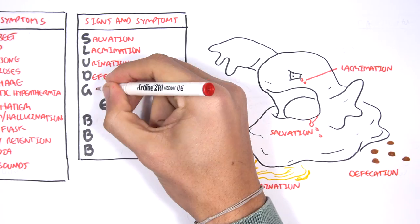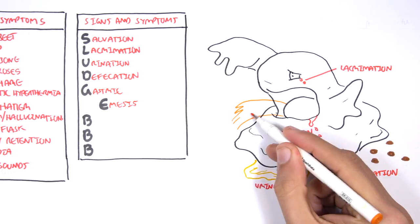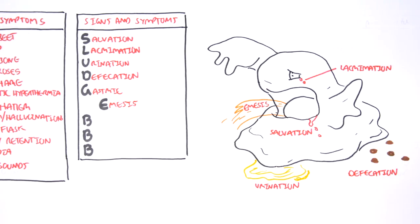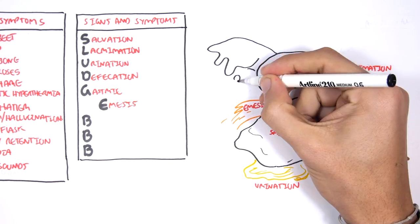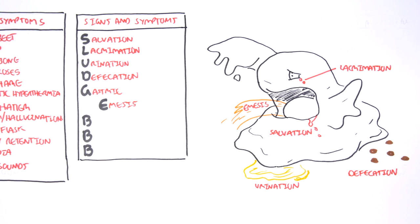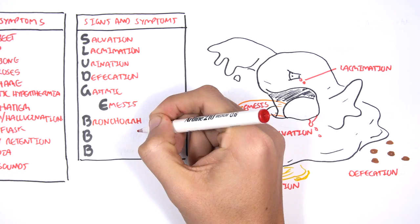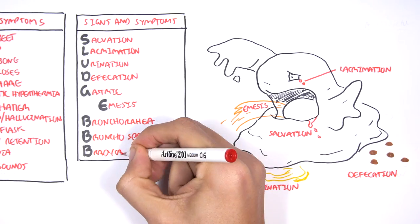G and E are together and this stands for gastric emesis which is essentially vomiting. Now the triple B's. B they stand for bronchorrhea, bronchospasm and bradycardia.